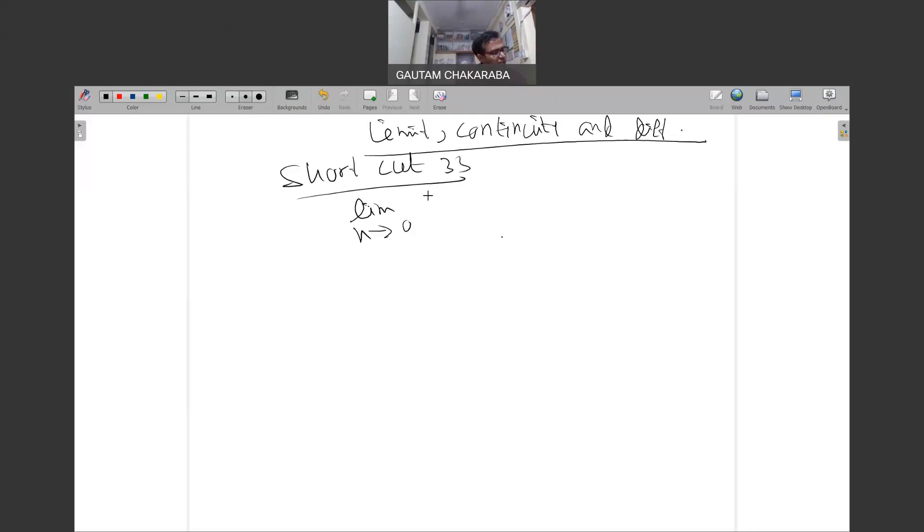Shortcut 33: limit x tends to zero, ax plus or minus b sine cx by dx plus or minus b sine px is equal to a plus or minus bc over d plus or minus bp. A plus or minus bc over d plus or minus bp.